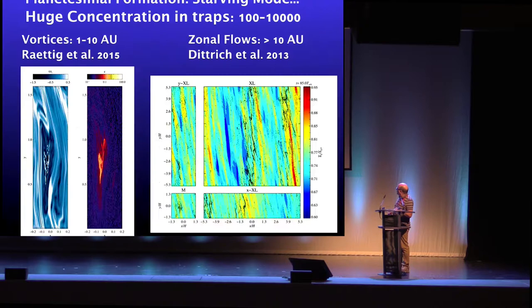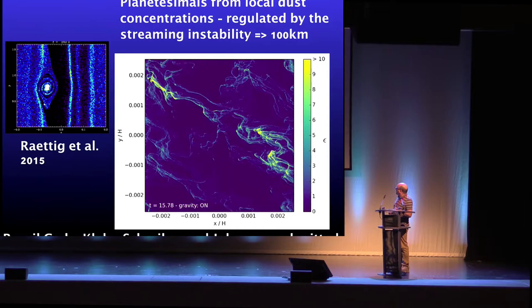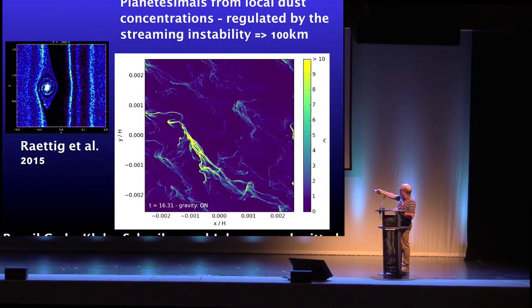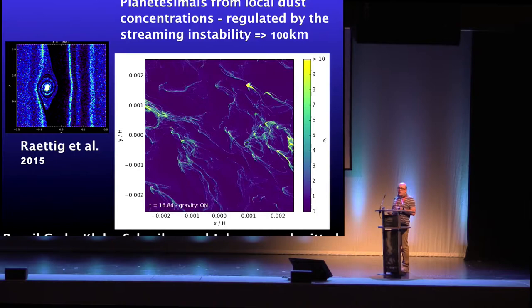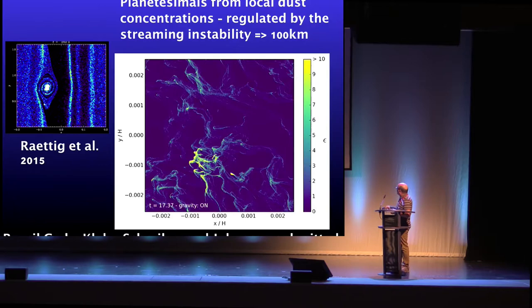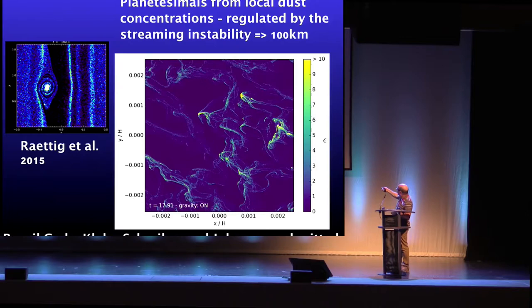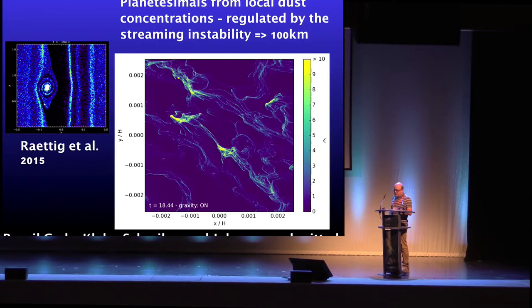If you form vortices in the disk, dust grains concentrate inside them — as shown in simulations where we plot vorticity in chunks of the disk. In this movie, things are getting concentrated inside a vortex, triggering the streaming instability. In this simulation we also include self-gravity among the pebbles, and you see them eventually starting to contract, forming gravitationally bound objects. This is one method by which we form our planets.